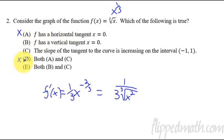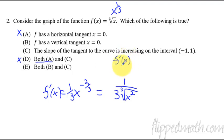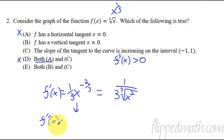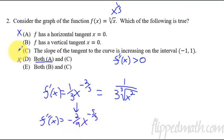So if it can't have a horizontal tangent, it automatically can't be D either, because D says both A and C. Now let's go to C: the slope of the tangent to the curve is increasing on the interval negative one to one. In order for the slope to be increasing, you need its derivative to be positive — meaning we'd need to take the derivative of f prime again. The second derivative comes out negative two-ninths times x to the negative five-thirds, which is obviously negative. So plugging in values between negative one and one will give negative answers, and that is not always positive. So it's not C.